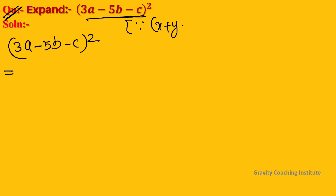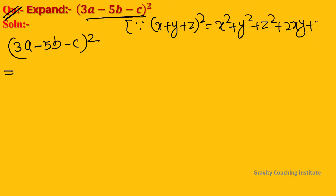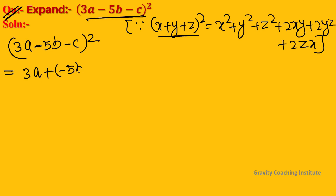We will use the identity (x + y + z) all square. We will rewrite the expression changing the two minus signs: (3a + (-5b) + (-c)) all square.